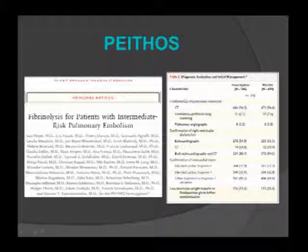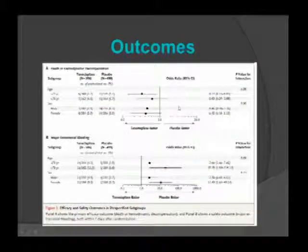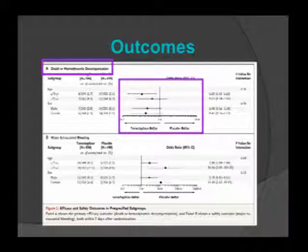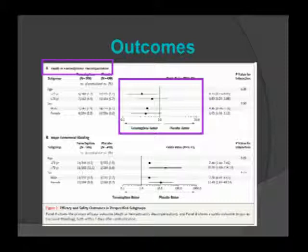PEITHO patient characteristics included CT-confirmed pulmonary embolism, confirmed right ventricular dysfunction on echocardiography or CT, and elevated troponins — all submassive criteria. The primary outcome was death or hemodynamic decompensation. Every data point favored thrombolytic therapy over placebo. Patients who decompensated on placebo were critically ill — intubated in the ICU on pressors — and the study authors noted some might not have been resuscitated outside a high-profile trial setting.